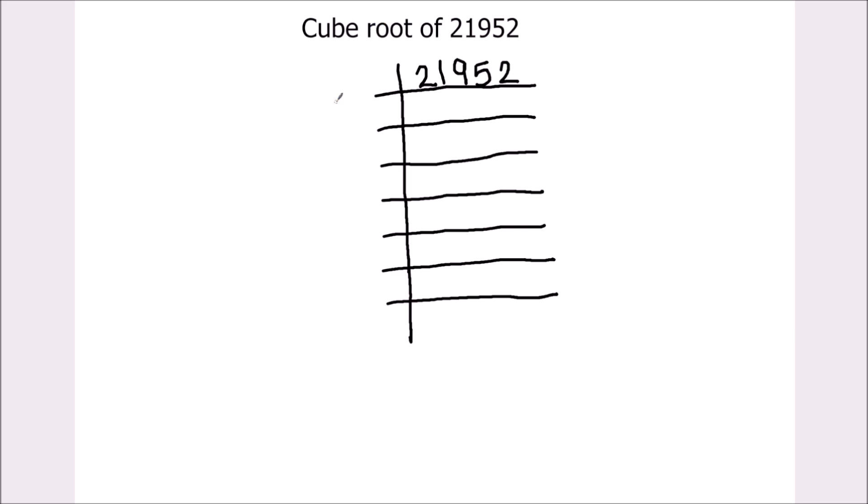In this method we divide number by prime numbers to find the factors, and after finding the factors we find the cube root. Let's start dividing this number by prime numbers. As this is an even number it is fully divisible by number 2. 2 times 1 is 2. 1 divided by 2 will not be possible so we will add a 0 and we will drop down the next number.